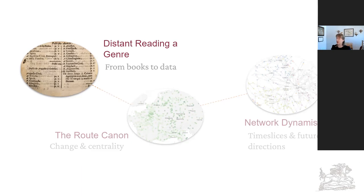Today I'll begin by briefly introducing the nature and construction of the mDigit dataset. I'll then talk about how I use network metrics to test and challenge existing scholarship on early modern European space. I'll discuss what this does for our periodization of early modern trade and travel, and finally I'll end with a brief discussion about where I see this project going next.